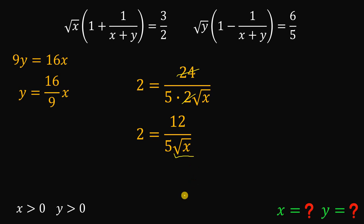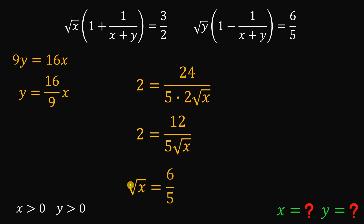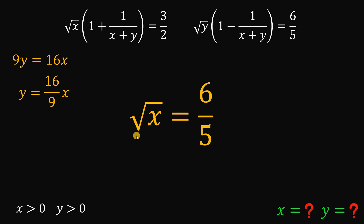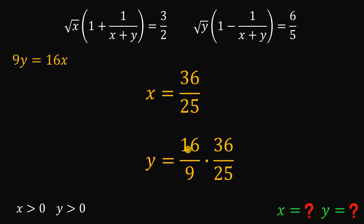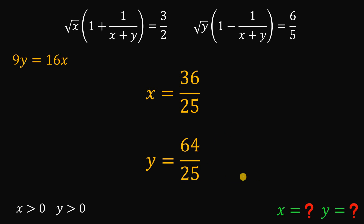Now we can solve for square root of x. We get square root of x equals 2 times 5 over 12, which is 10 over 12, simplifying to 6 over 5. Therefore square root of x equals 6 over 5, and squaring both sides gives x equals 36 over 25. For y, we use y equals 16 over 9 times x, so y equals 16 over 9 times 36 over 25. Since 36 and 9 share a factor of 9, this simplifies to 64 over 25.